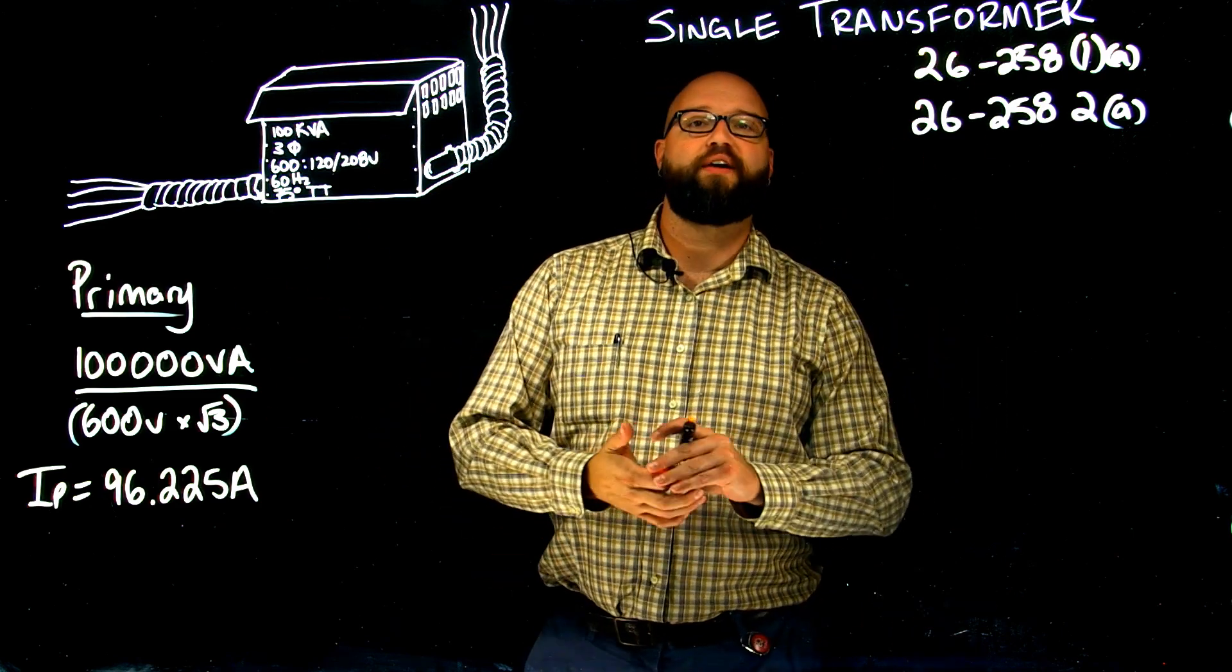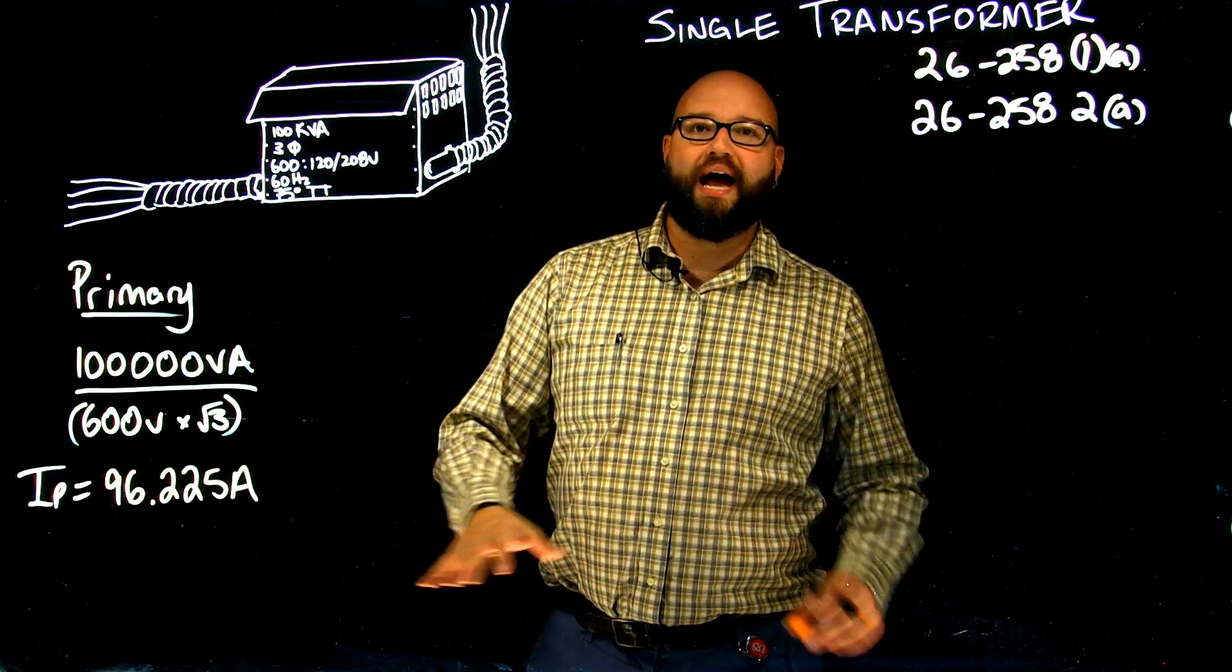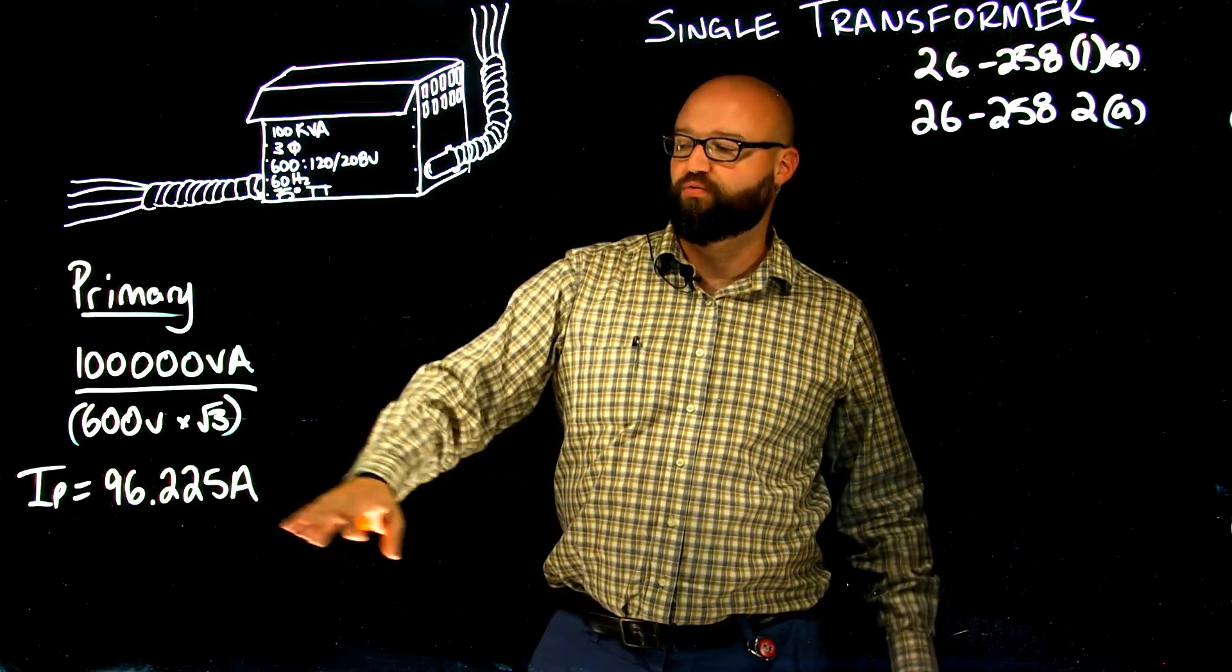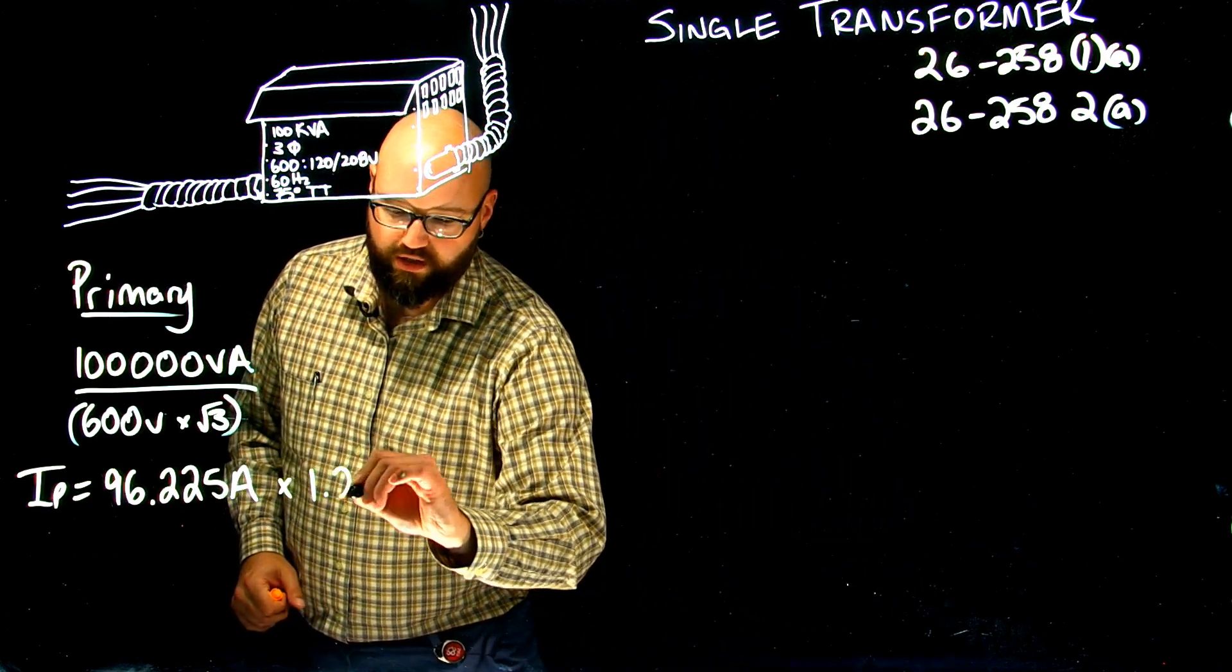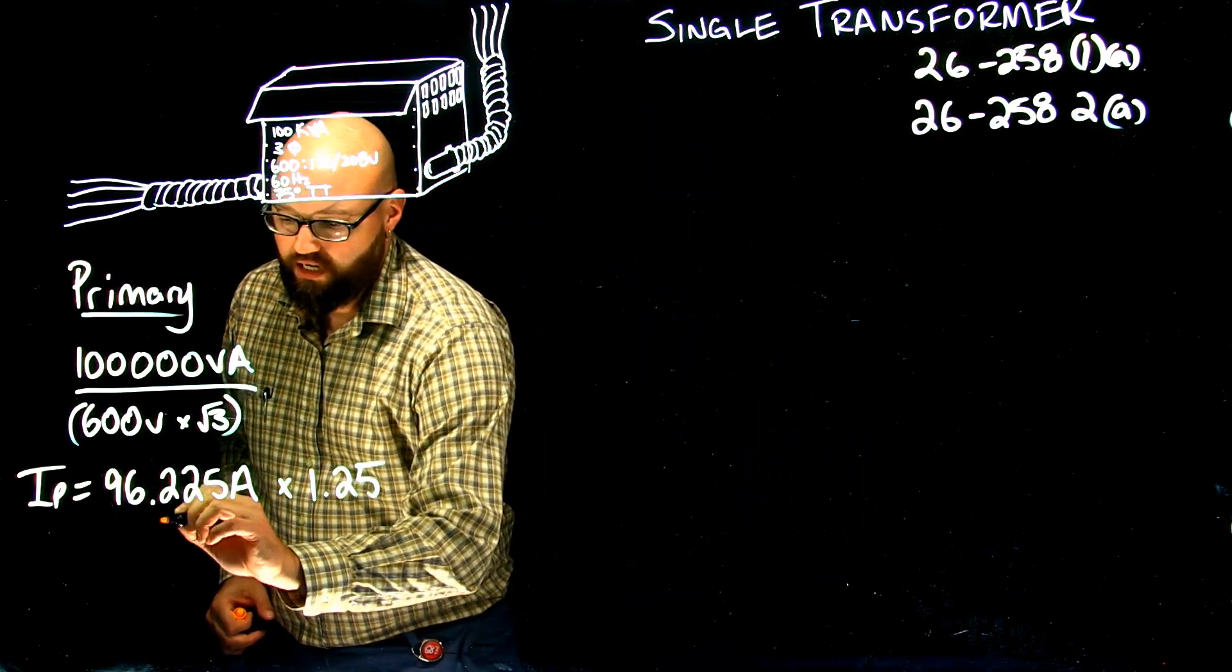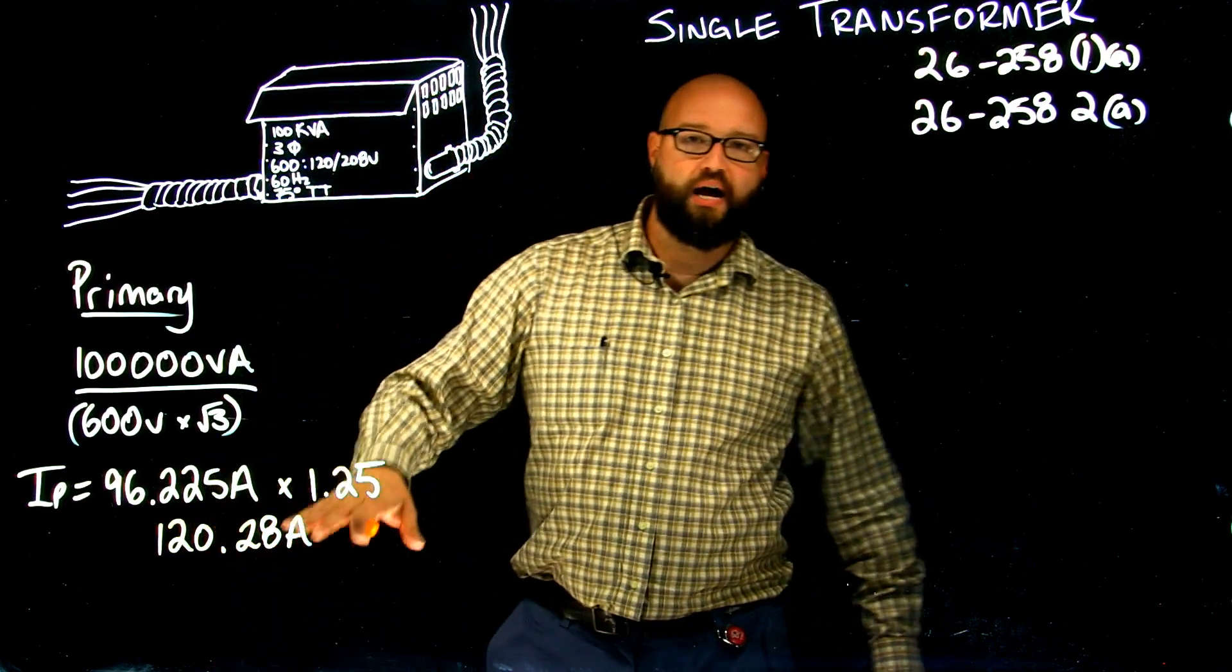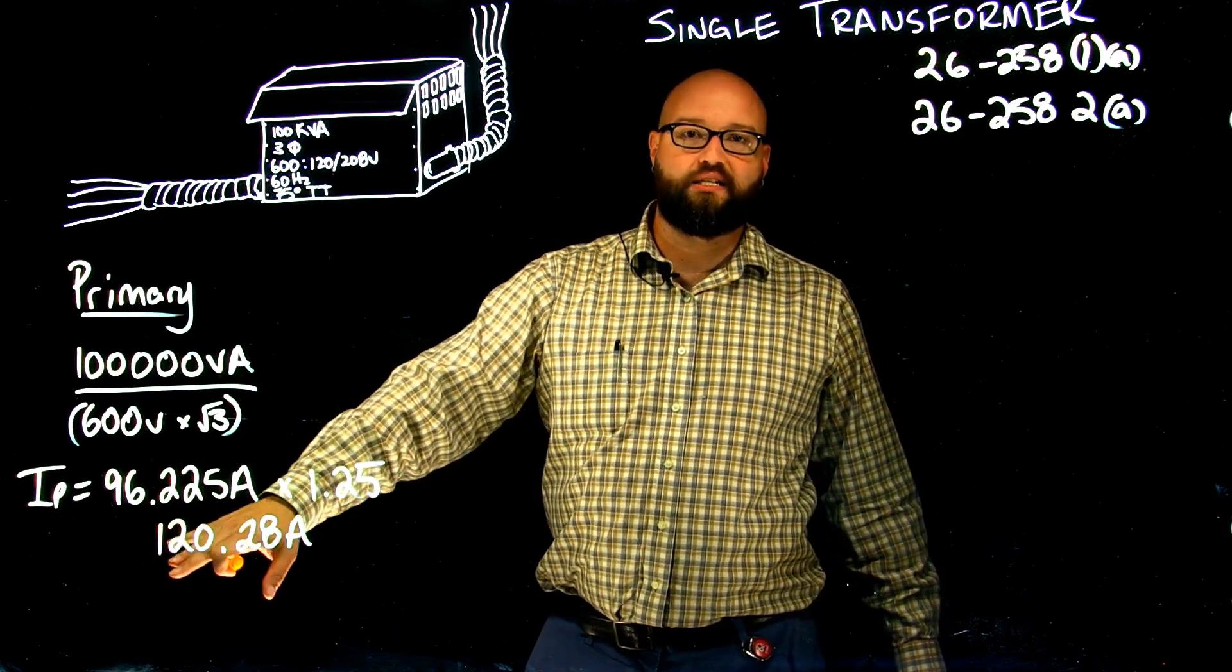Now, what it tells me in 26.258.1A is that my conductor ampacity has to be at least 125% of this number. That means we have to be at least 1.25 times greater than that rated primary. So, times 1.25 gives me my minimum ampacity of my conductor, and we should see 120.28 amps. I know that I have to pick a conductor with an ampacity of at least this number.